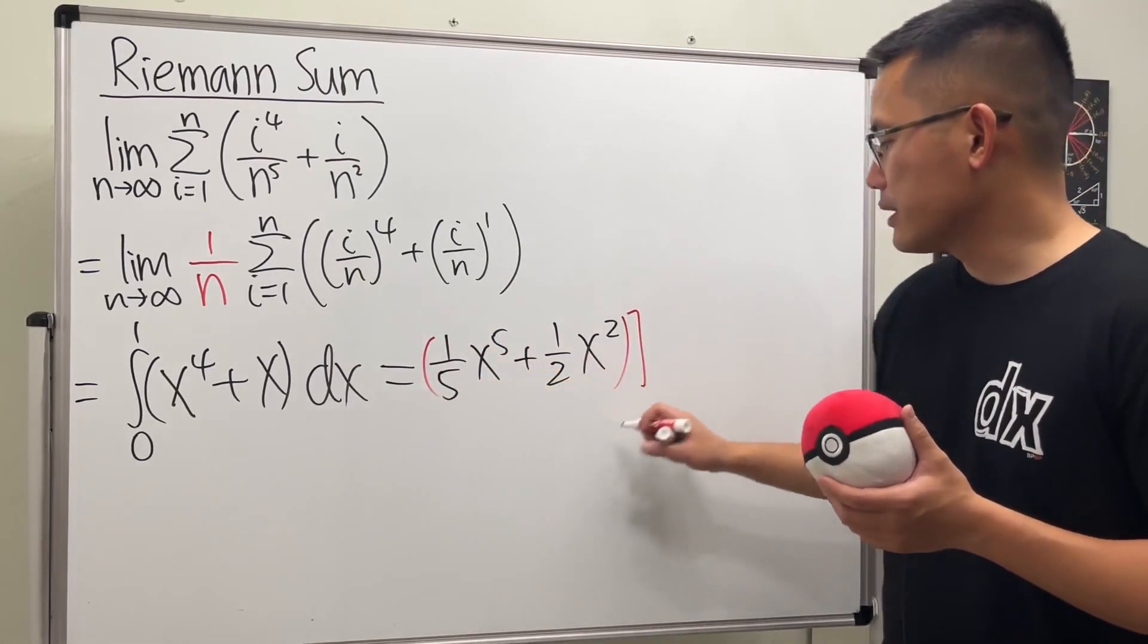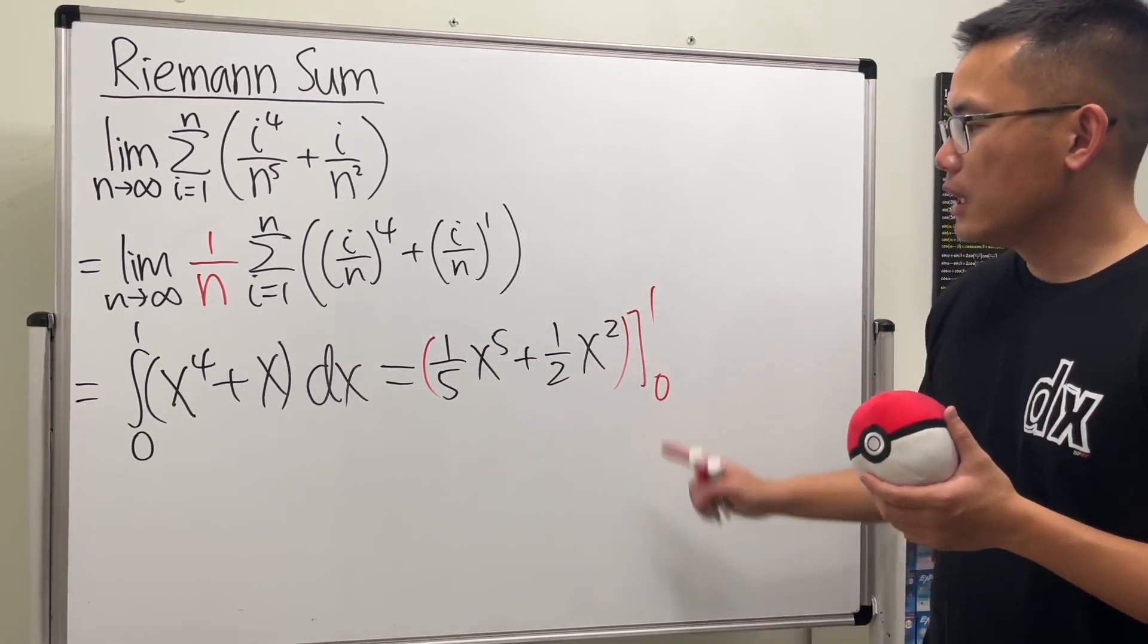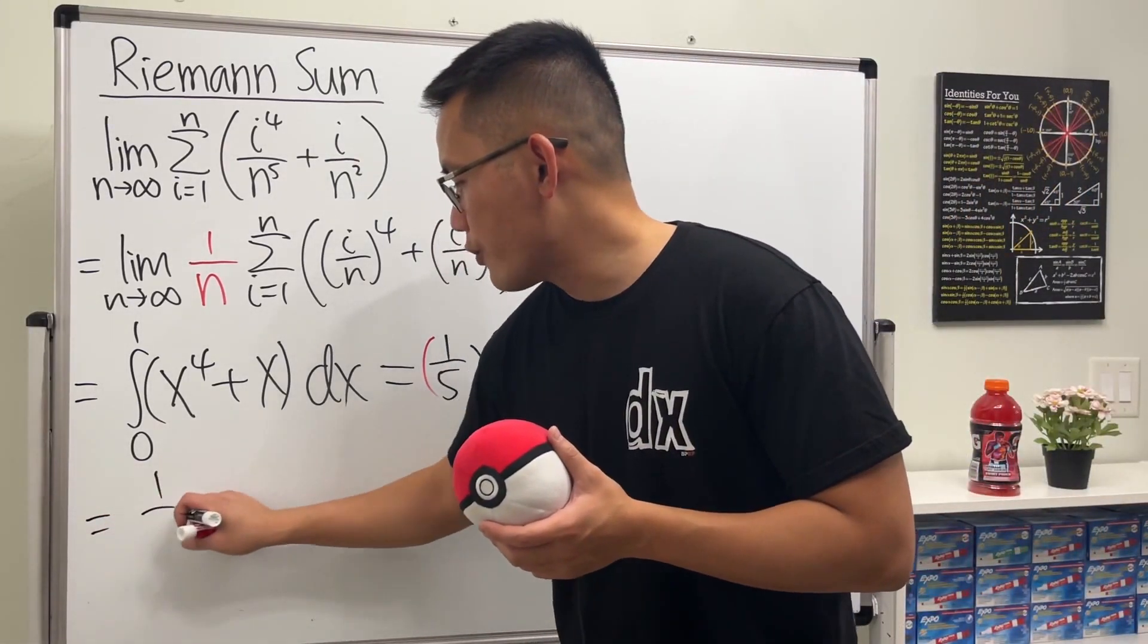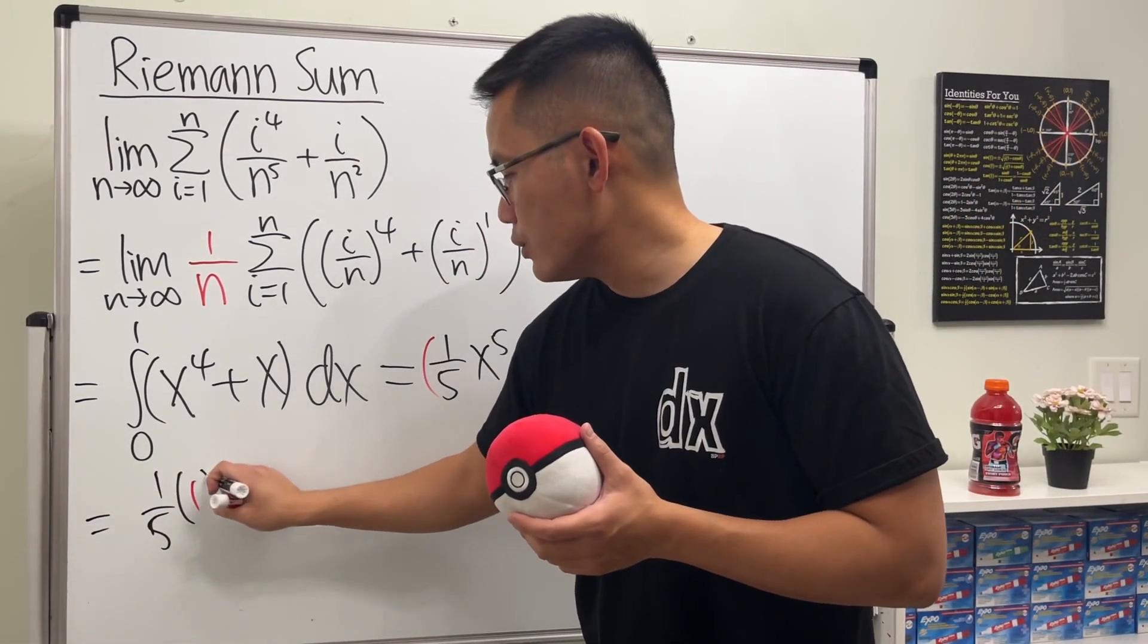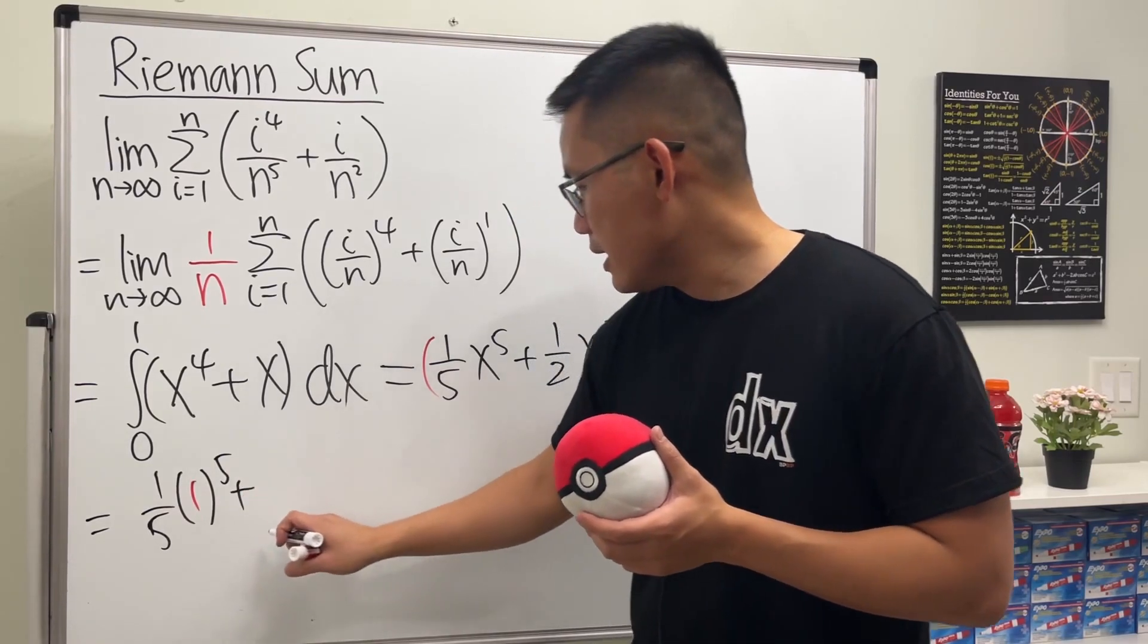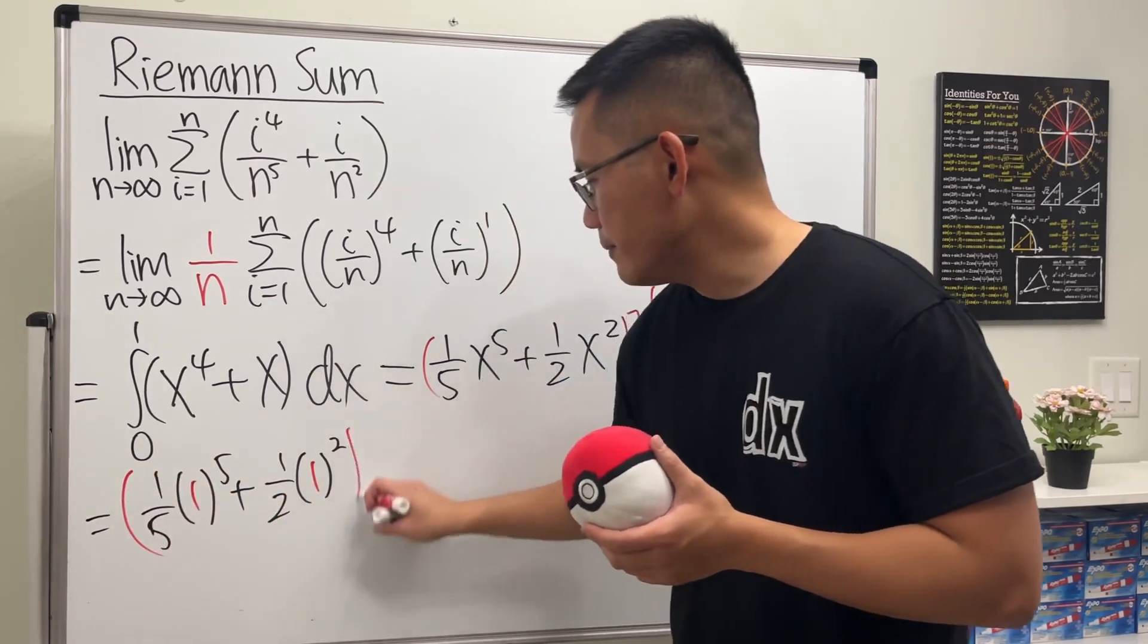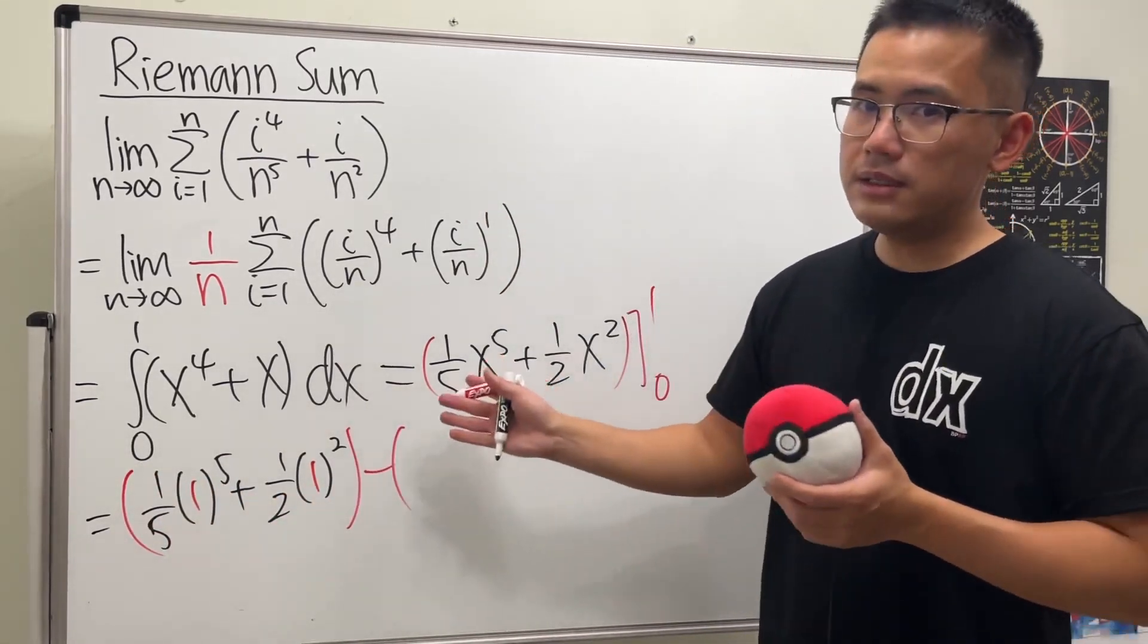And then we are going to just plug in zero and one, putting one first and then putting zero. So we will get one over five times one to the fifth power, and then plus one over two times one squared. This is the first term.